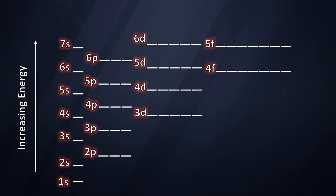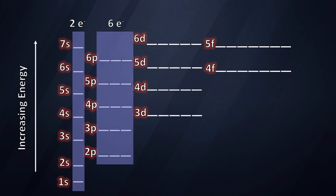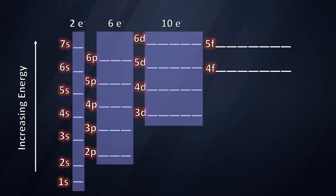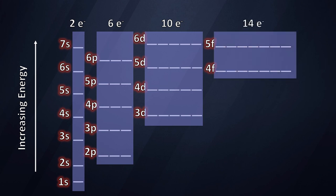Each subshell can hold a different number of electrons. The s subshells can each hold 2 — that's 2 electrons per orbital. The p subshell contains 3 orbitals that can hold 6 electrons. The d can hold 10, and the f can hold 14.